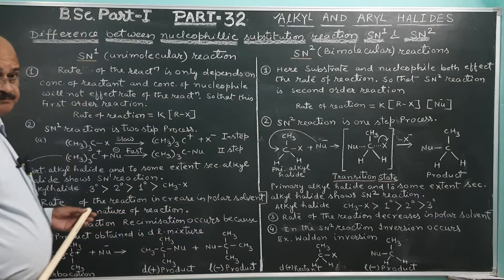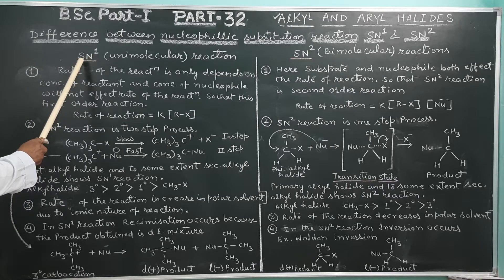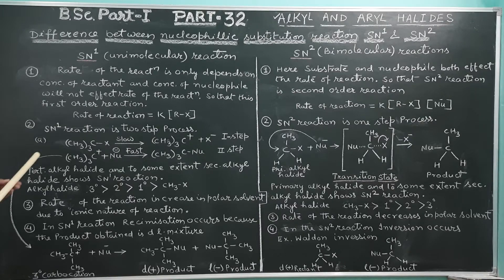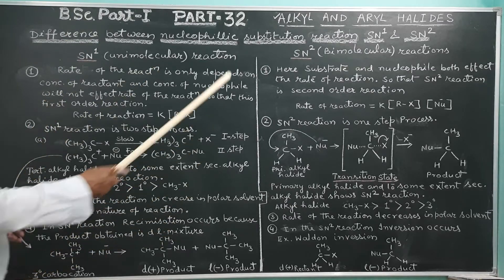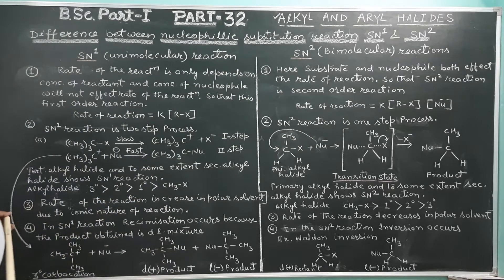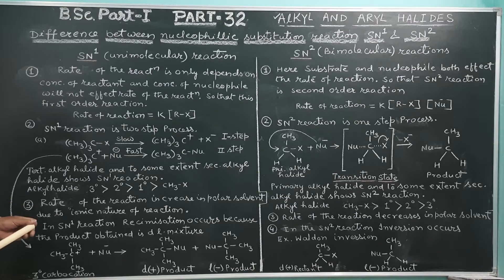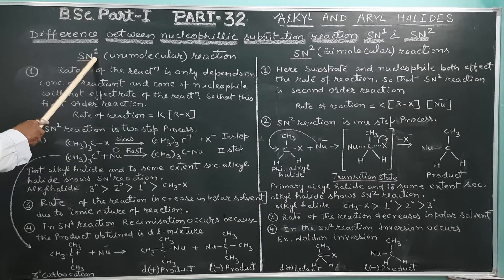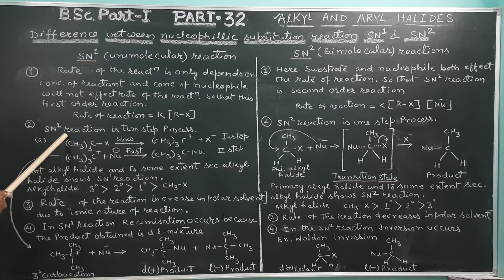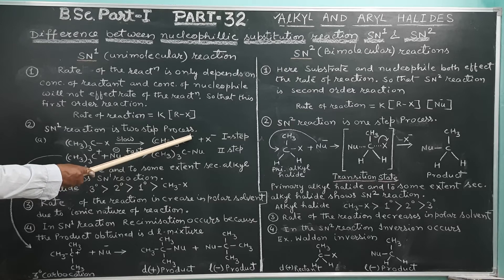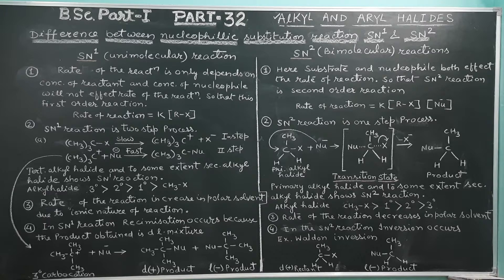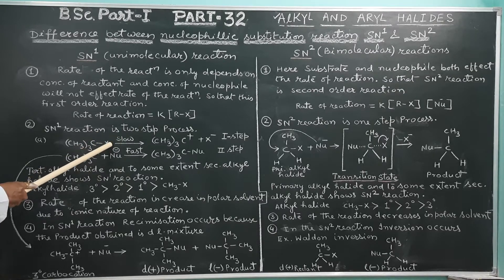Another important point: SN1 is a two-step process. The first step is the slow step, in which the bond between carbon and halogen breaks, forming a carbocation. This is the rate-determining step.